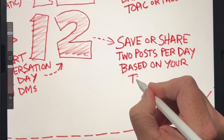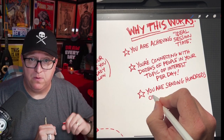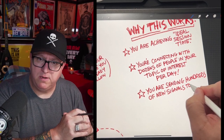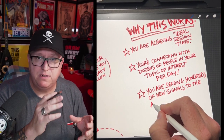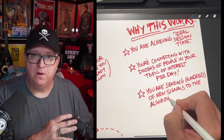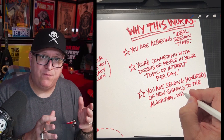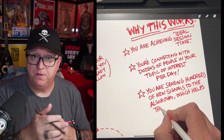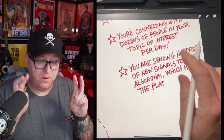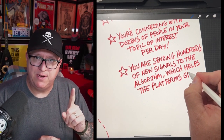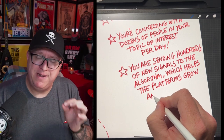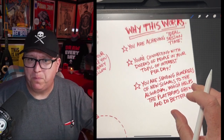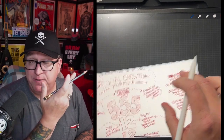Every step you just took sent a signal — maybe multiple signals — to the platform. If every action you just took counted as a positive signal sent to the machine, you just sent hundreds of signals for the machine to learn from, and you've achieved or exceeded the ideal session time. The platform will start considering you a super user — a more engaged user — if you do this more often. Think about this: you just connected with or touched 23 individual people in that one session. If you did this every day for a week, you're touching 161 individual people. That's 644 people you touch in one month. Now imagine if you did this twice a day.